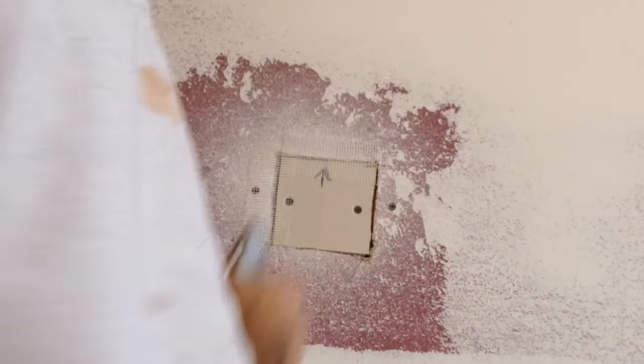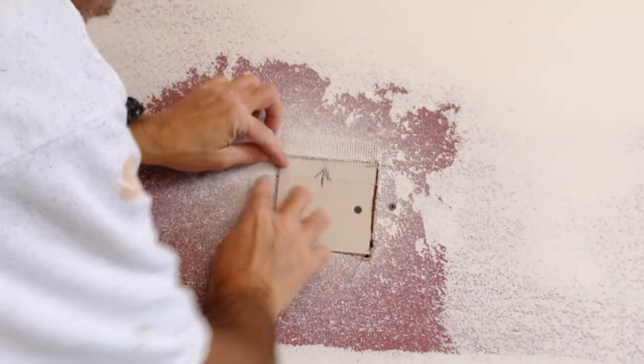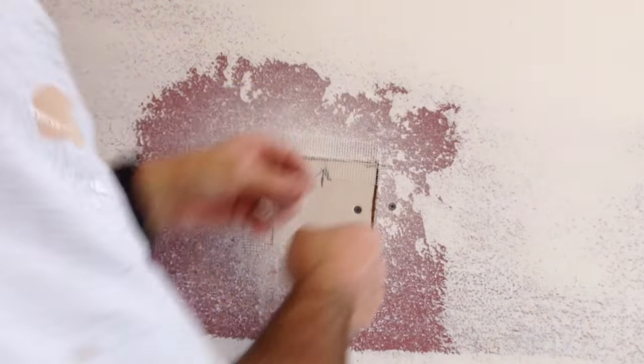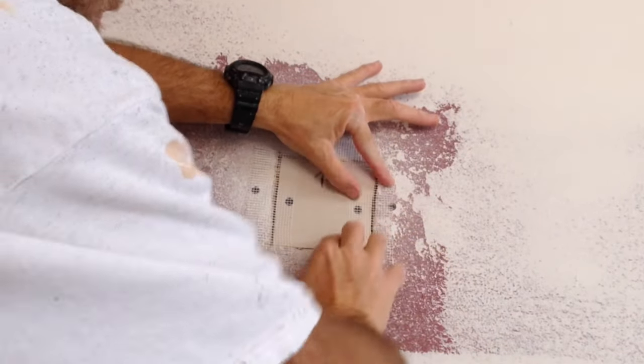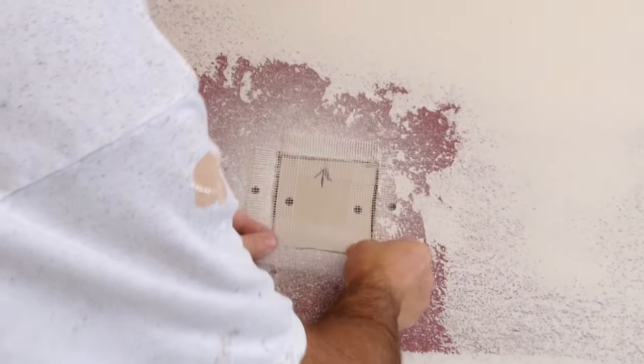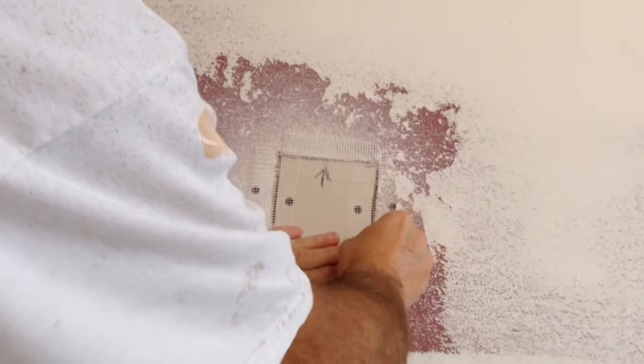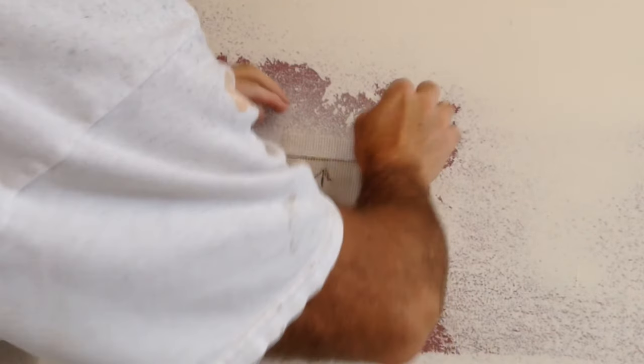Now you're going to want to use a quick setting joint compound that comes in a powder form whenever you use fiberglass mesh tape. You also want to push the tape into the joint so it's actually going inside that little joint.